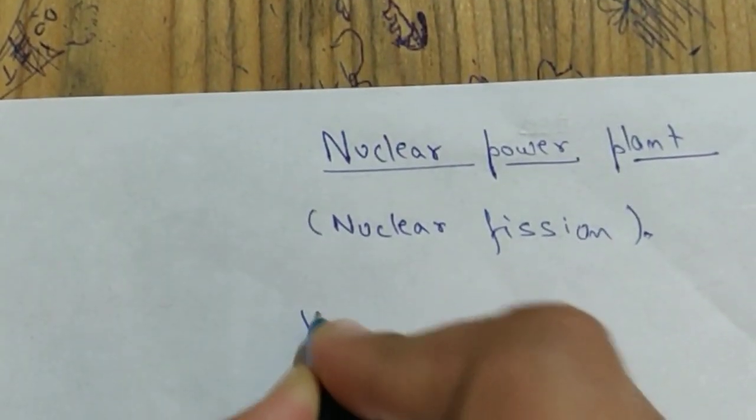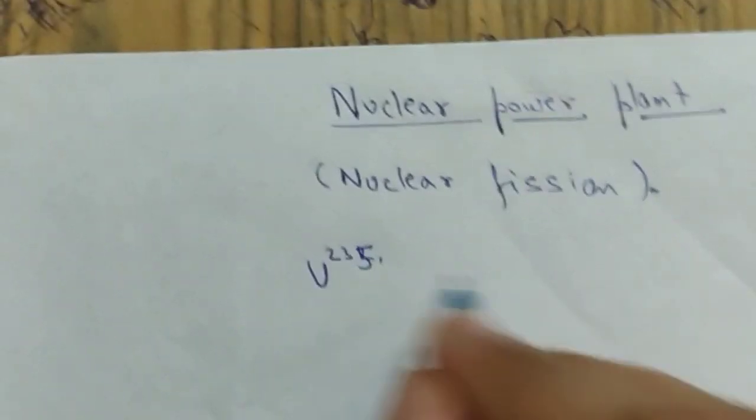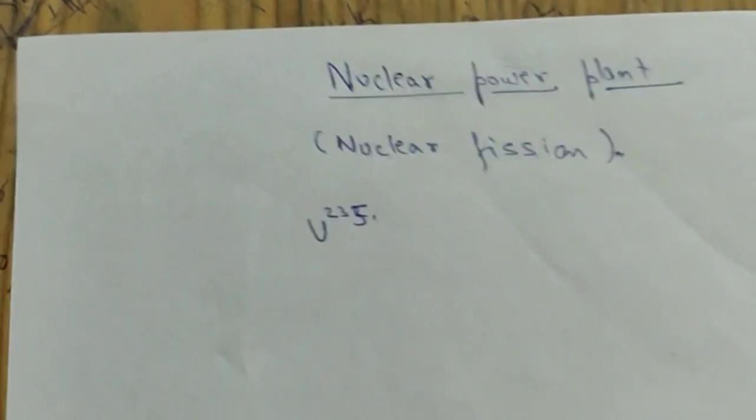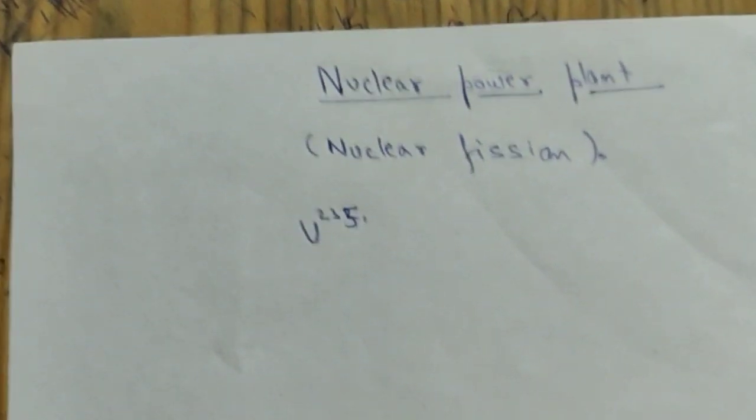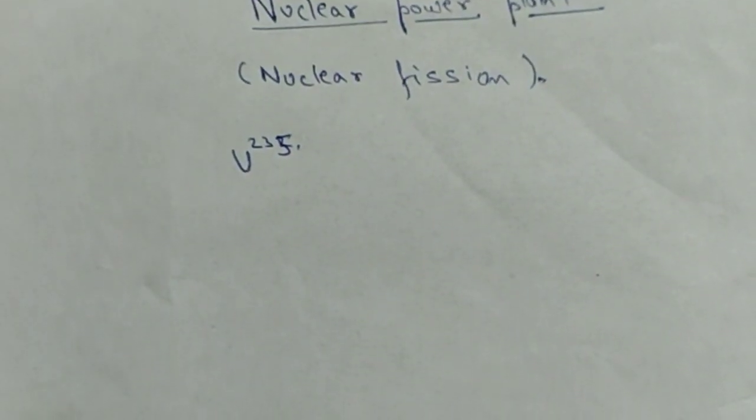Currently U-235, uranium-235 atom is used in nuclear fission. It is broke into two smaller particles and this generates a huge amount of energy. When I say huge I mean it, it generates very huge amount of energy.